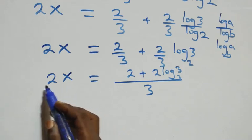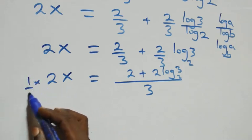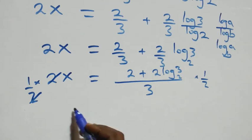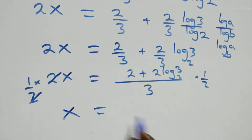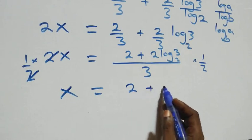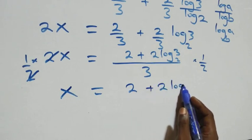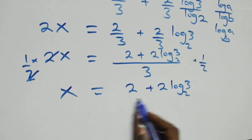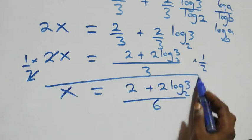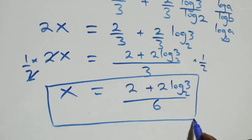Next step, we divide both sides by 2, or equivalently multiply both sides by 1 over 2. The 2s cancel and we have x equals 2 plus 2 log 3 base 2, over 6. So the value of x in this given problem is (2 plus 2 log 3 base 2) over 6.